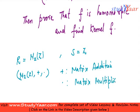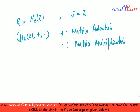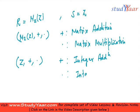And the next ring that we have is Z comma plus comma dot, where plus and dot are normal integer addition and integer multiplication.